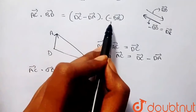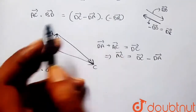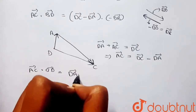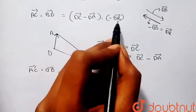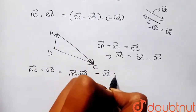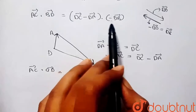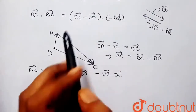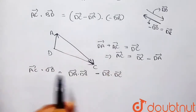From here I can write vector AC dot vector BD equals: vector DC minus vector DA, dotted with minus vector DB. Expanding this gives: vector DA dot vector DB minus vector DB dot vector DC.